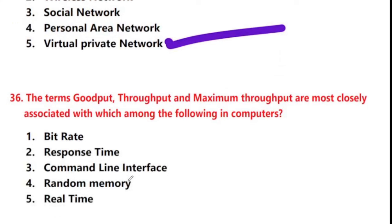Next question: the terms goodput, throughput, and maximum throughput are most closely associated with which among the following in computers? Options: bitrate, response time, command line interface, random memory, real time. Answer is option 1: bitrate.